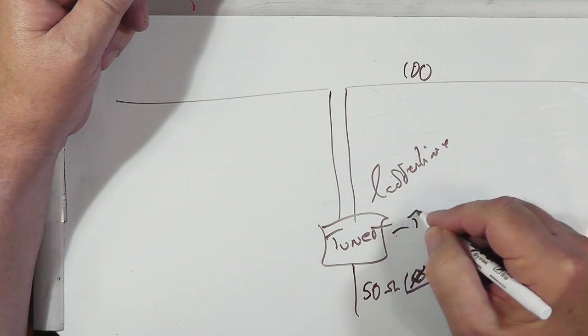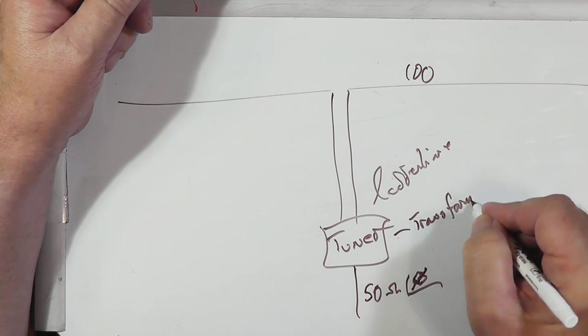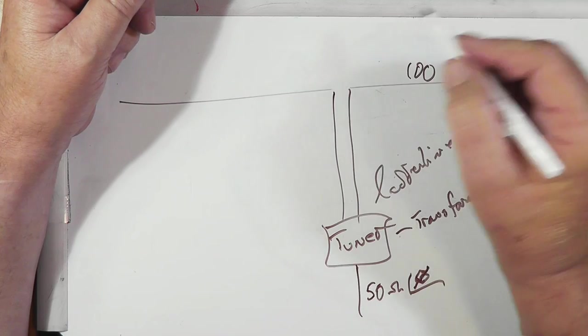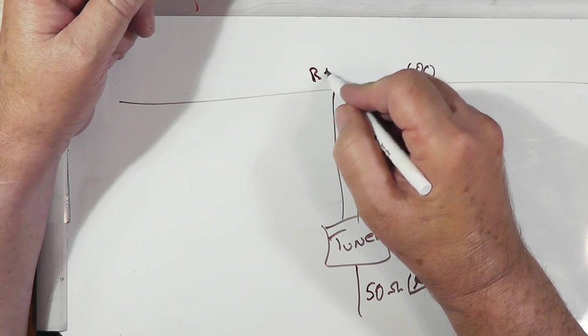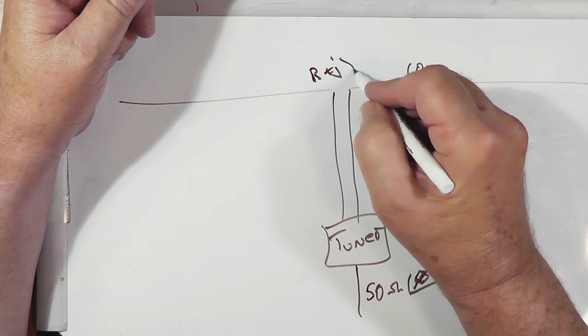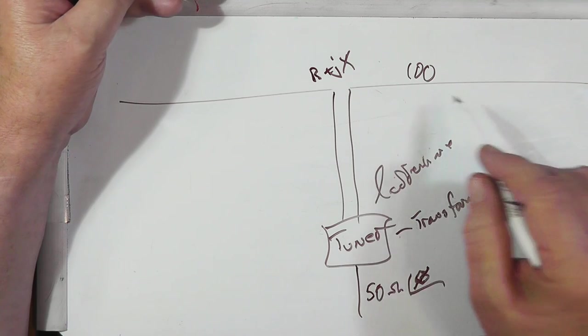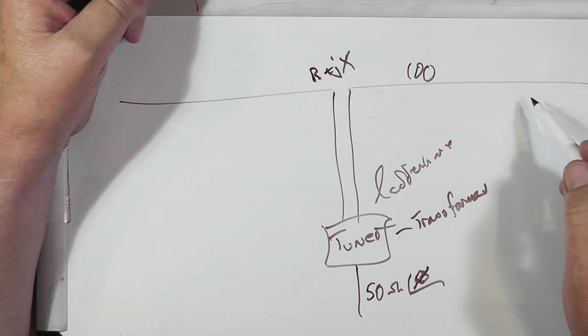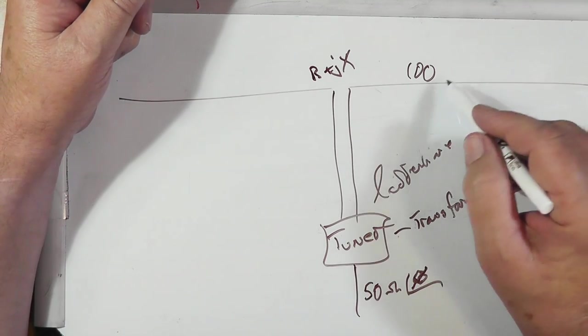This is a transformer. And then you have this input impedance, which is some unknown R plus some unknown reactive component. If this is too long, the reactive component is inductive. But now if you use open wire line,